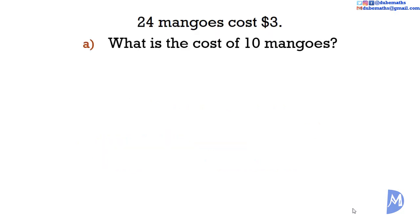We want to find out what is the cost of 10 mangoes. We know that 24 mangoes cost $3. The ratio of what we want to find out over what we are given is 10 mangoes over 24 mangoes.